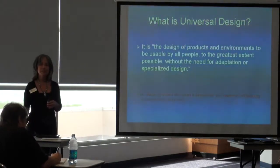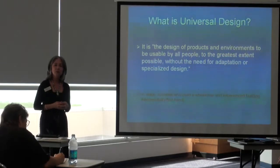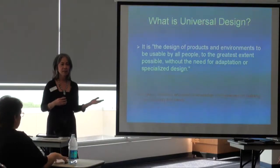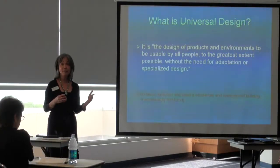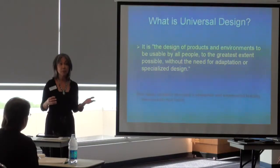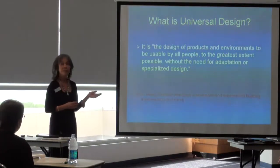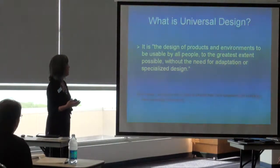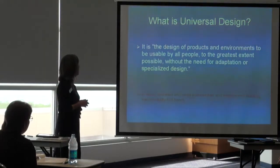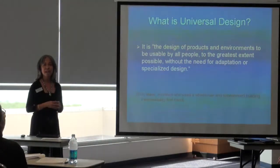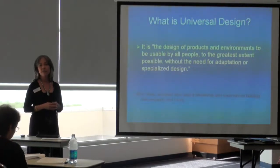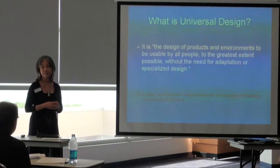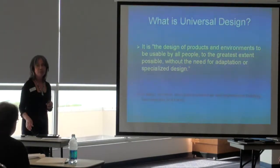What is Universal Design? It all started with a guy named Ron Mace, who uses a wheelchair. He was an architect and wanted to figure out how to get around buildings and campuses in his wheelchair. He started the concept of Universal Design — the design of products and environments to be usable by all people to the greatest extent possible without having to change the environment. Examples include bathrooms, curb cuts, and ramps.